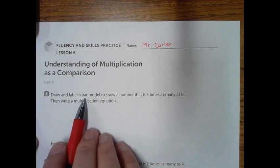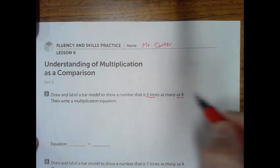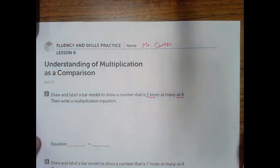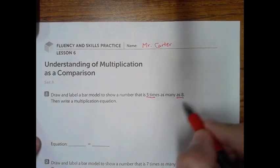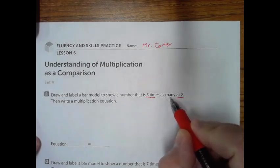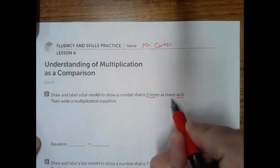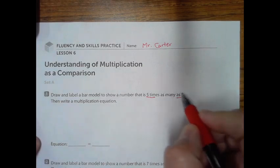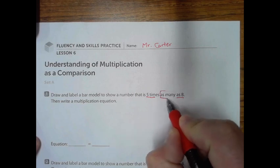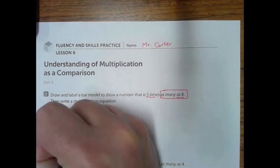It says draw and label a bar model to show a number that's five times as many as eight, then write a multiplication equation. The little trick with these is that you want to take that number after the words 'as many as' and start with that. Since it's five times as many as eight, we're going to start with that number eight. So we're going to draw a bar with the number eight in it.